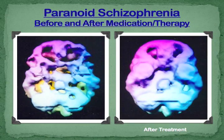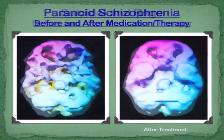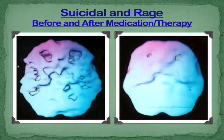Someone with paranoid schizophrenia — see the significant deficits there; it's a very debilitating illness. But after treatment, areas fill in a lot better. Again, looking at the top of the brain: schizophrenia and then after treatment. Somebody with depression, suicide, rage — before treatment and after treatment.